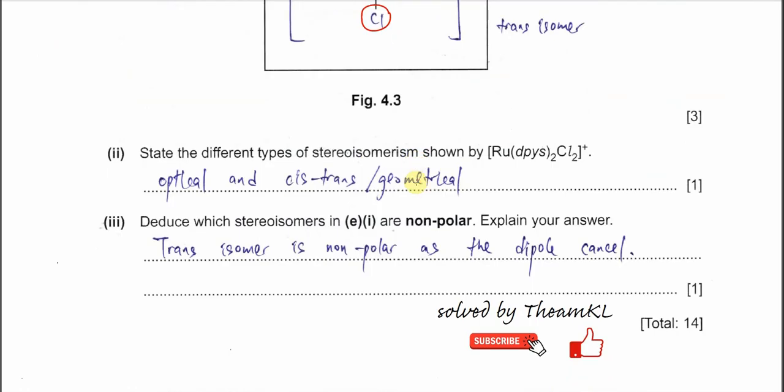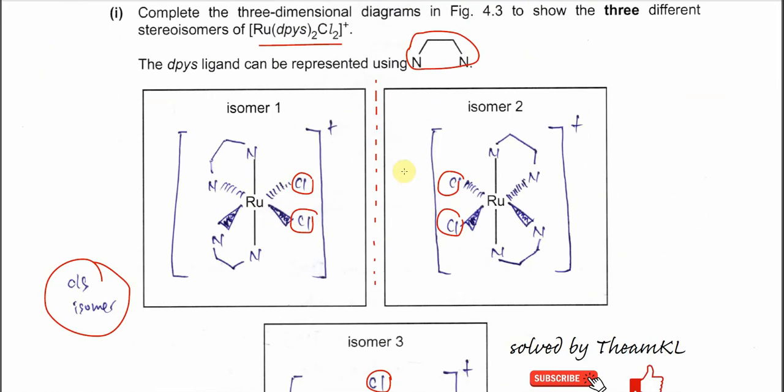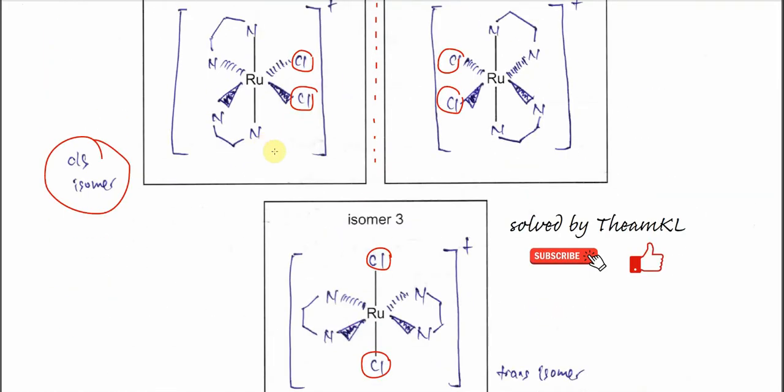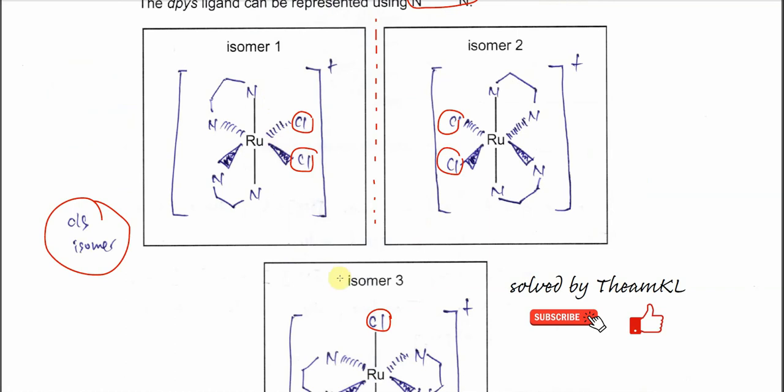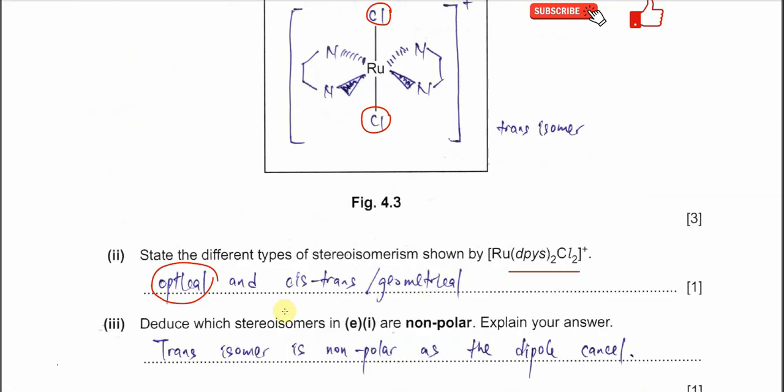Part 3: State the different types of stereoisomerism shown by this complex ion. I told you just now, it will form optical isomers—the first two—and between isomers one and three, or two and three, they are cis-trans isomers. It has two types of stereoisomers.